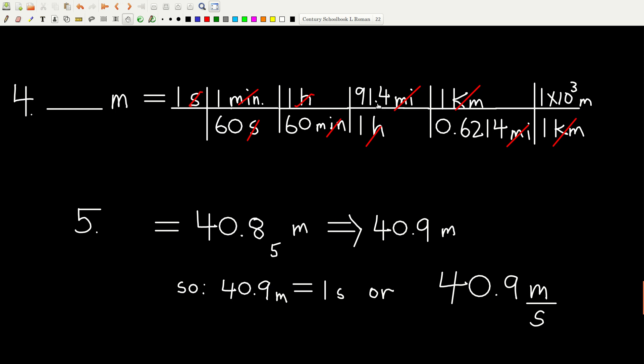This has three sig figs. The one is exact. This one is exact. This has four sig figs. And these are both exact. So of all these, the least number of sig figs is three. So we're going to round to three. And we get 40.9 meters.